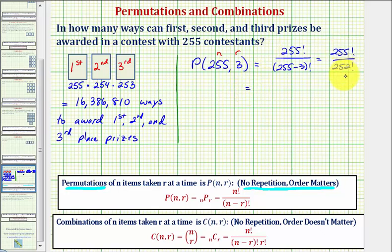So simplifying by hand, because we have 252 factorial in the denominator, we'll write the numerator as 255 times 254 times 253 times 252 factorial. This is still 255 factorial, but because our denominator is 252 factorial, we can now easily simplify this.